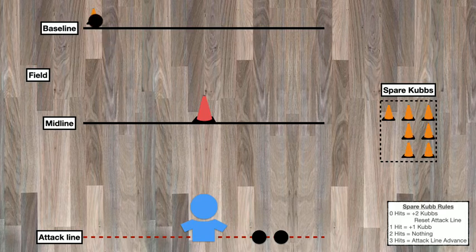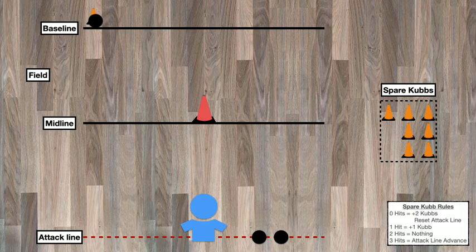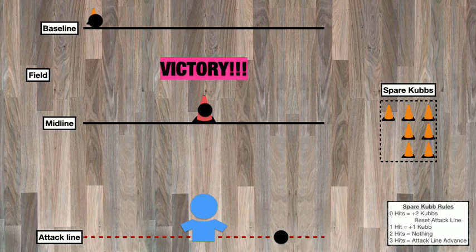On this round, we have a successful hit. And now, since finally all of the baseline Kubbs have been knocked down, we may attack the King. And if we do so, we are victorious.